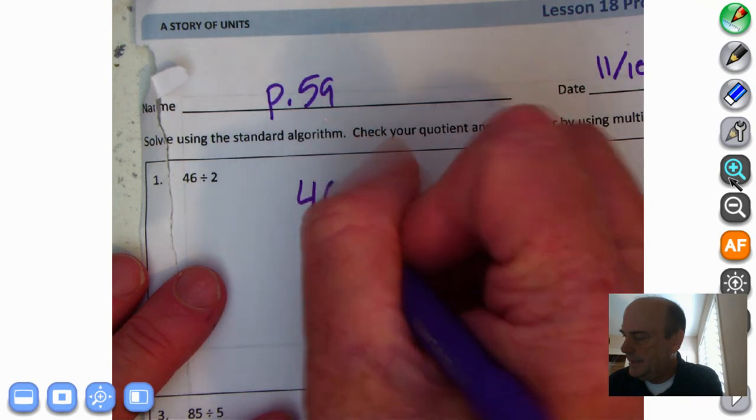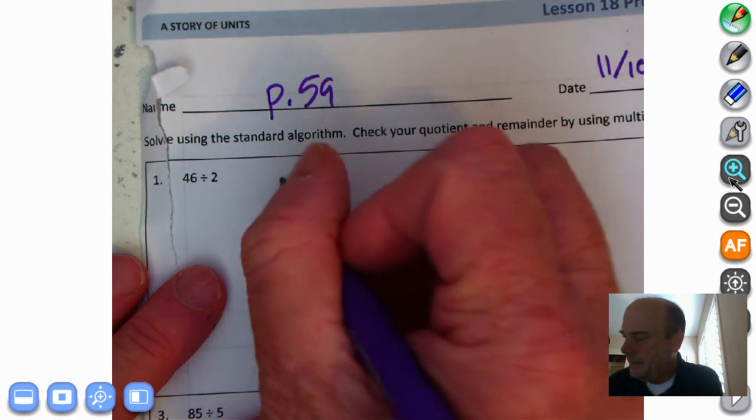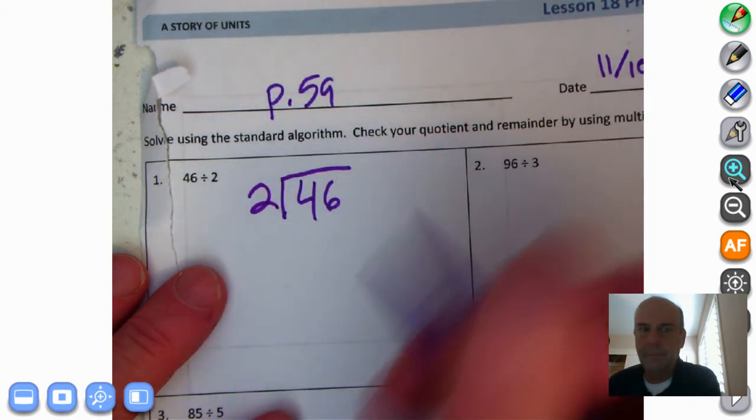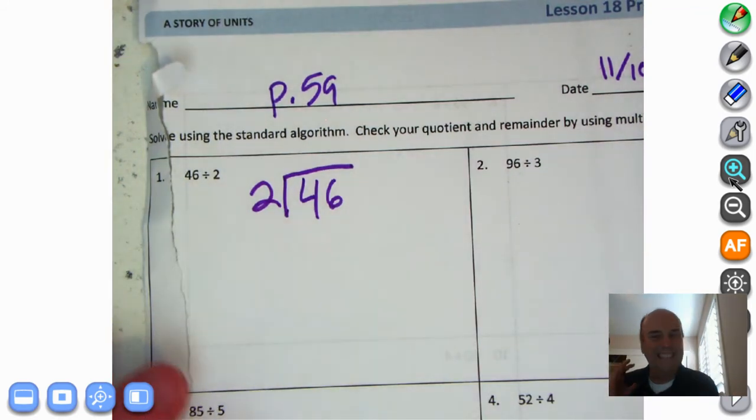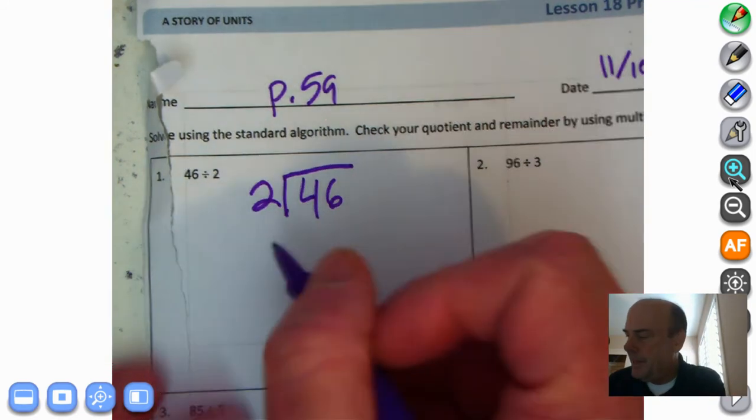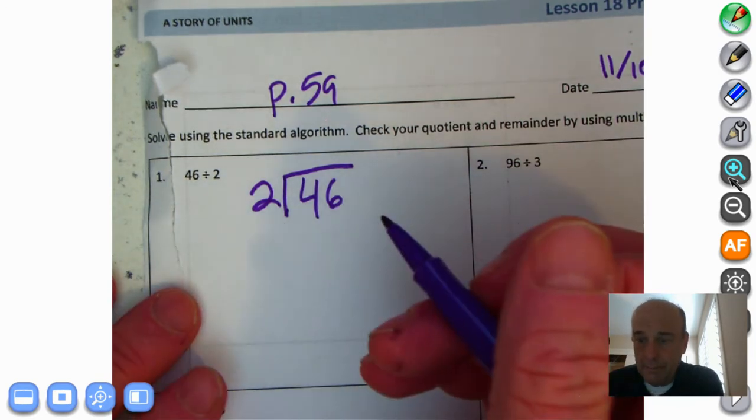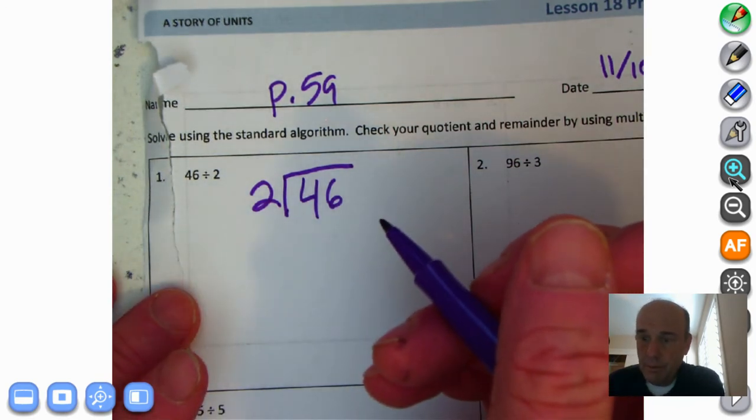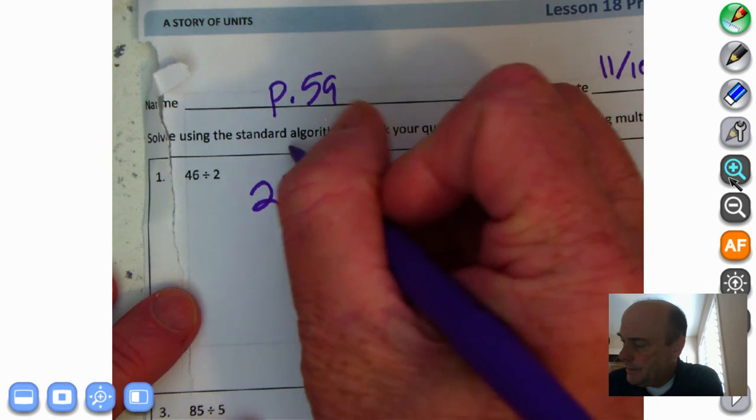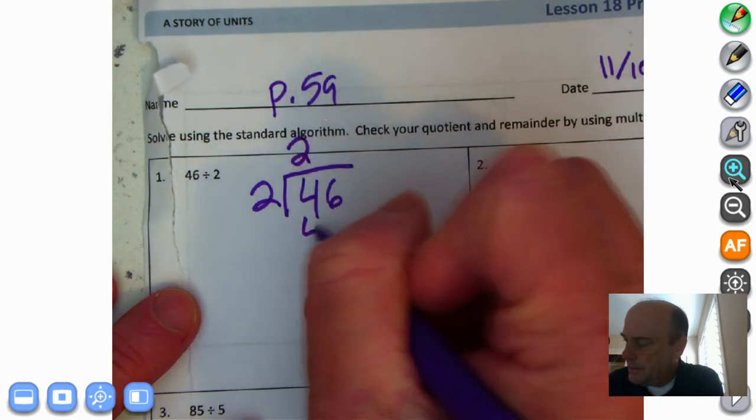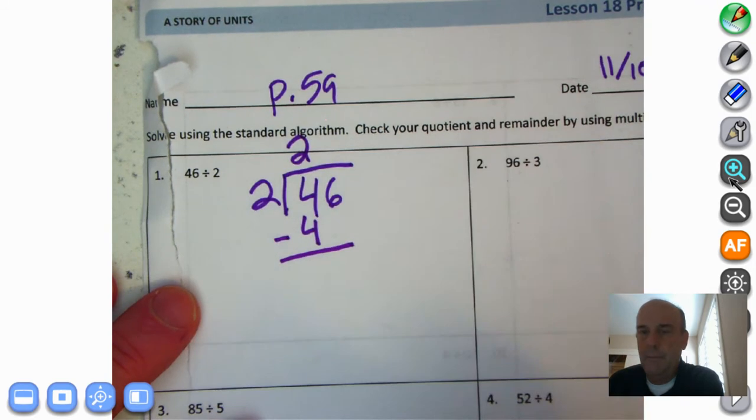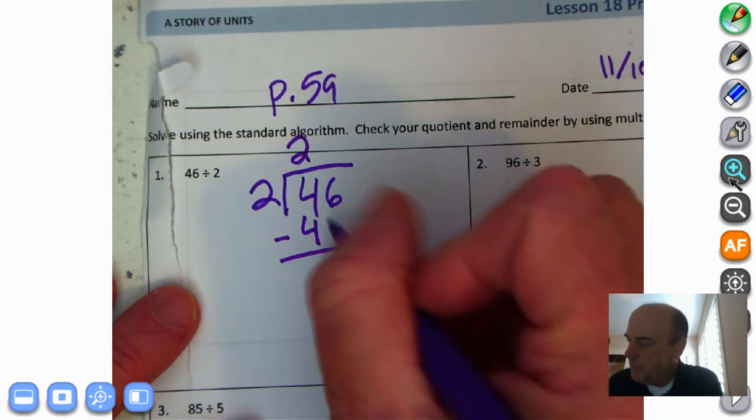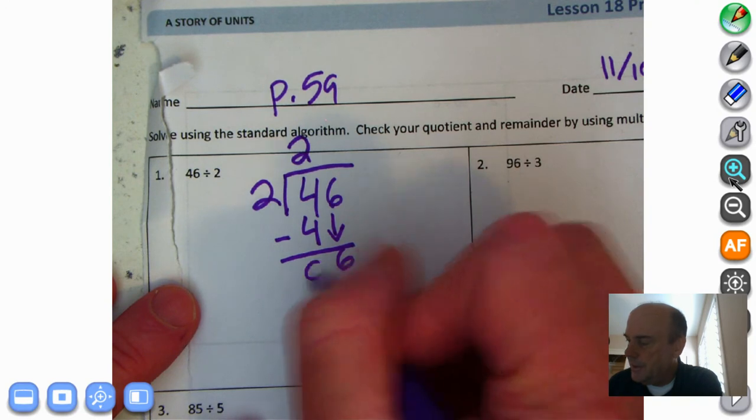So 46 is our dividend, 2 is our divisor. Now let's not do the place value, let's just tackle this problem. 2 times 2 is 4. In this case, it's actually 2 times 20 is 40. Then we are ready to subtract. Bring down the 6. 4 minus 4 is 0.